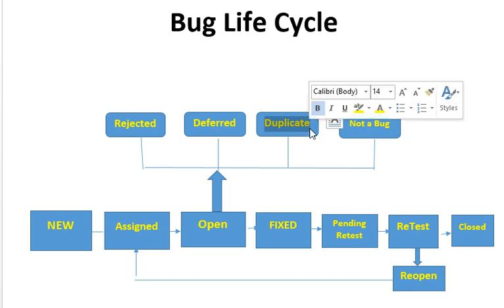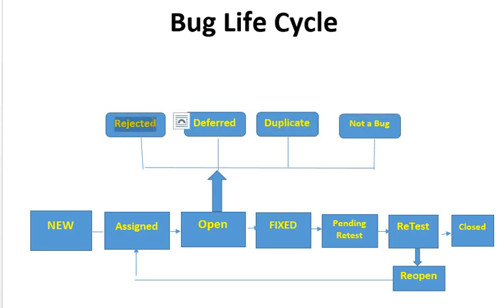Another state is Duplicate. A bug goes to Duplicate status when there is already a bug in the system for the same problem — this bug is just a duplicate of some other bug.